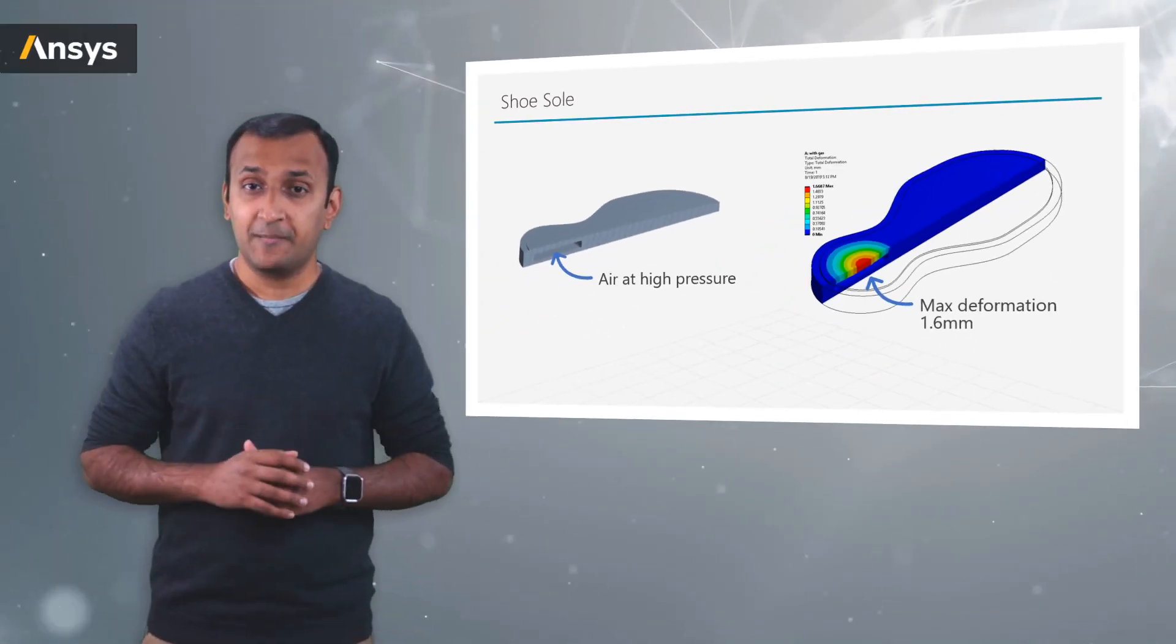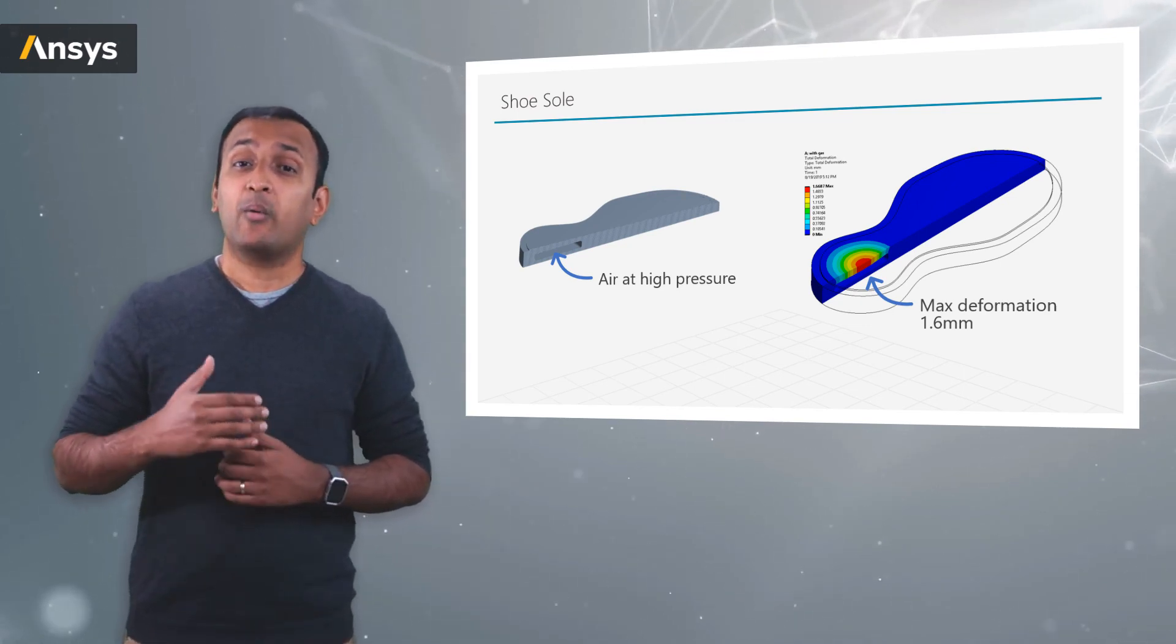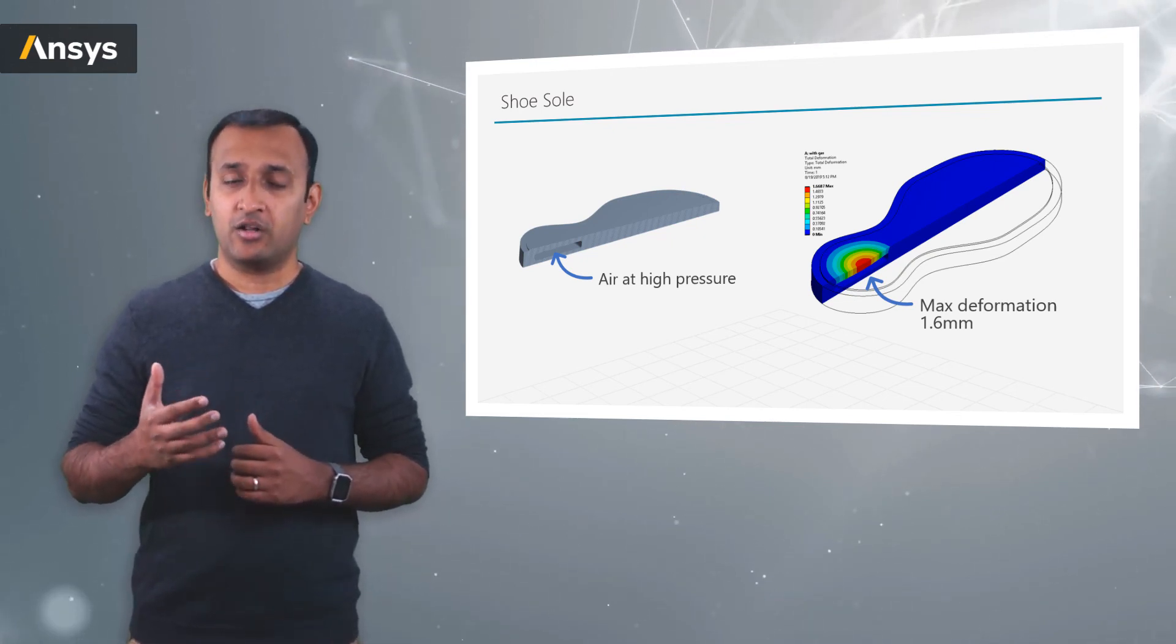In other words, the nearly incompressible nature of pressurized air provides that additional stiffness in the material while keeping the mass density on the lower side.